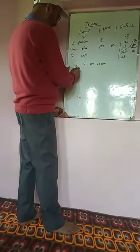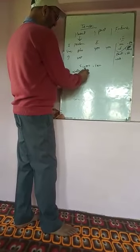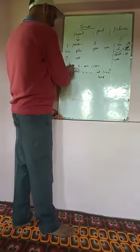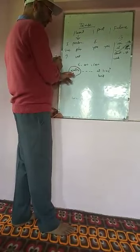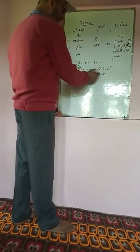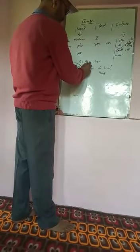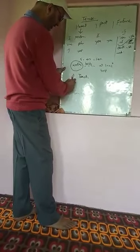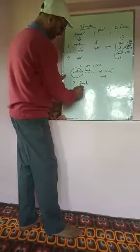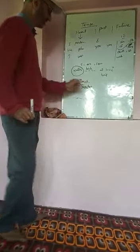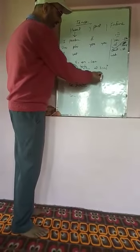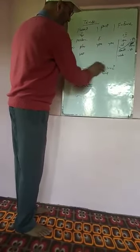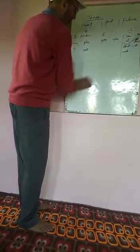For example: 'Water ___ at 100 degrees Celsius.' We are talking about water, so it becomes third person singular, therefore it takes S — 'water boils.' Now, 'I teach' — if we say 'he ___,' it will be 'he teaches,' where we add ES. So it is clear that it takes S, ES, or IES when it is third person singular in present indefinite.